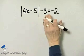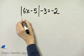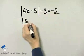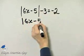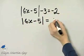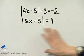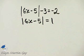To do so, I will add 3 to both sides of the equation. So I'll have the absolute value of 6x minus 5 is equal to negative 2 plus 3, which is a positive 1. So I did isolate the absolute value.